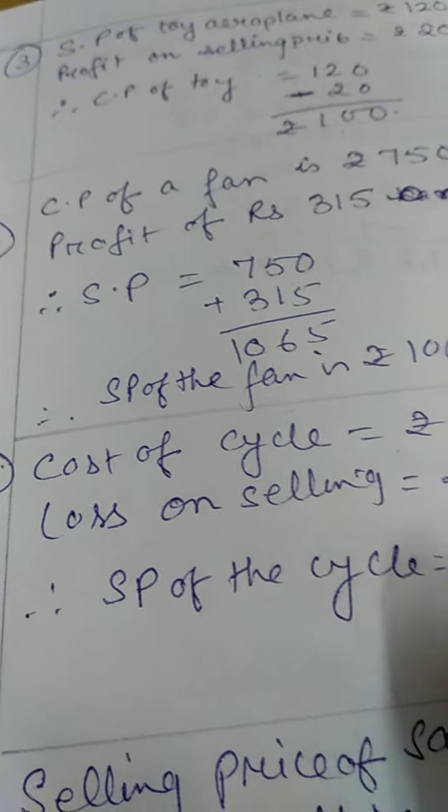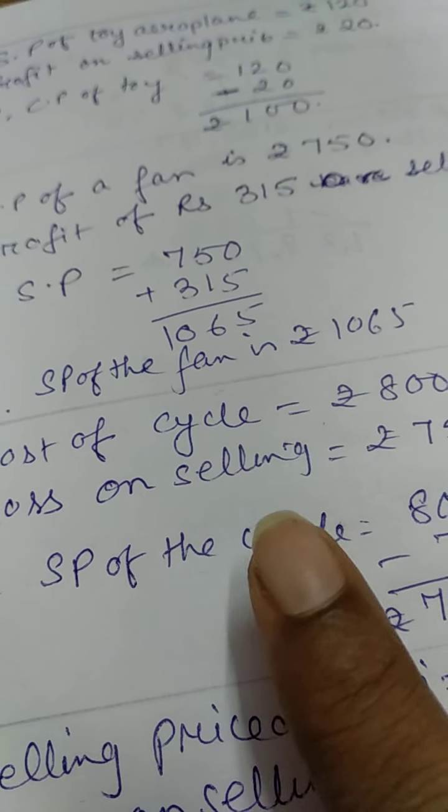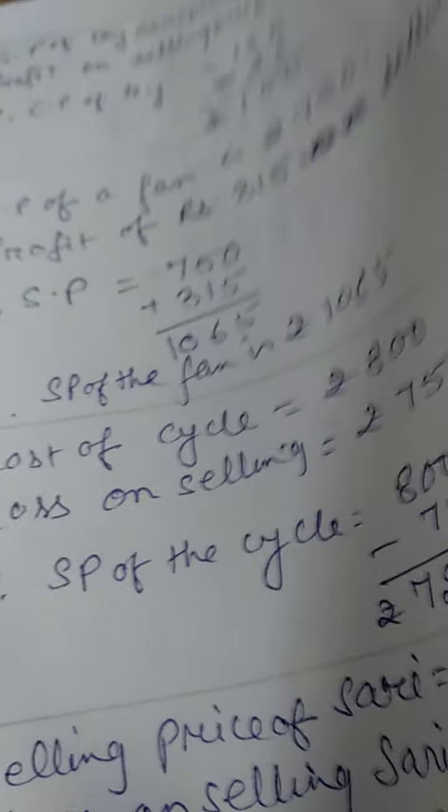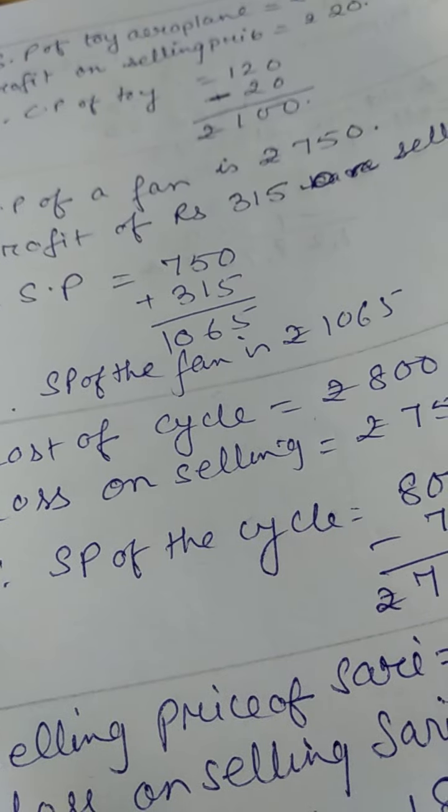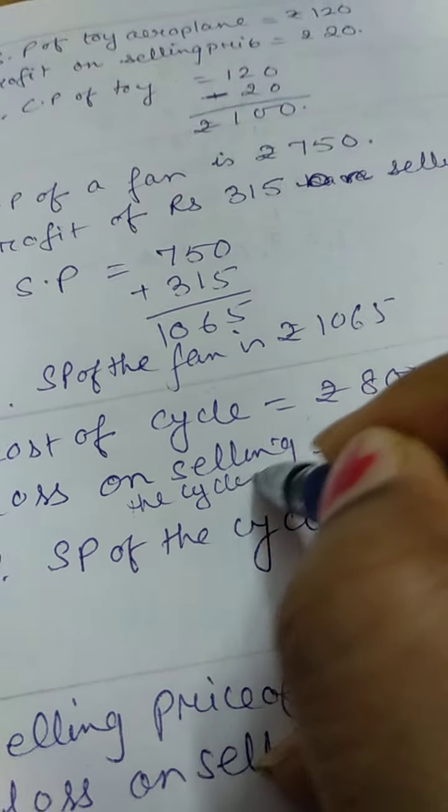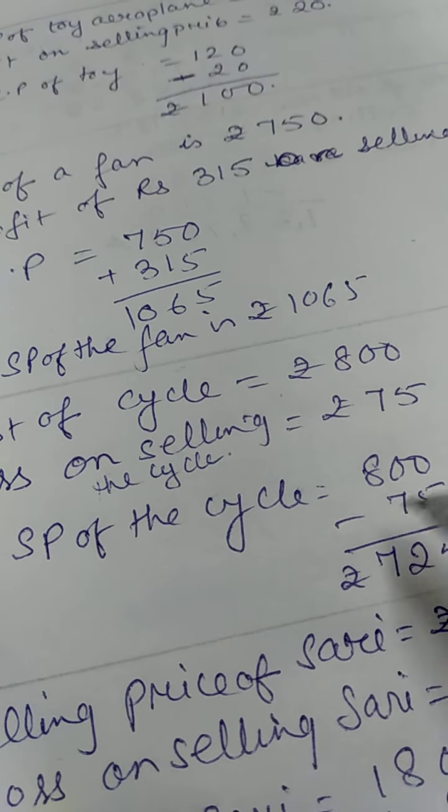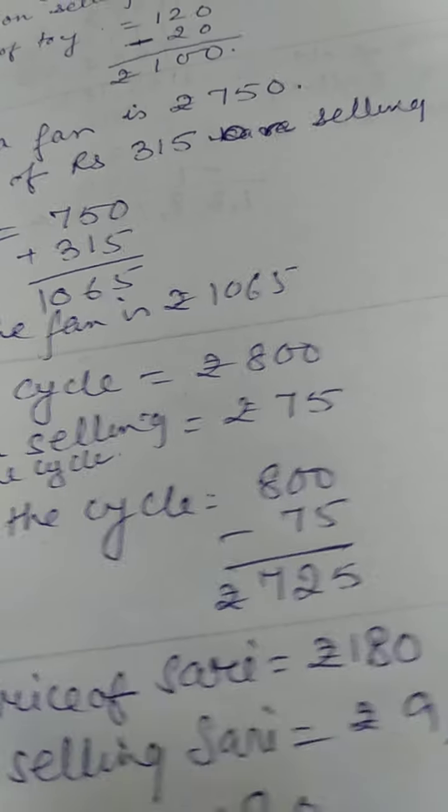Again, cost of the cycle is Rs. 800. Loss on selling Rs. 75. So, SP of the cycle is Rs. 800 minus Rs. 75.